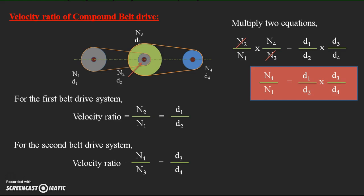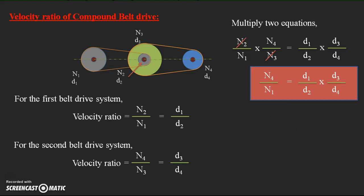These are the two expressions for the velocity ratio of the simple belt drive system and the compound belt drive system. Try to remember these formulas, as they are useful for solving problems when finding the power transmitted by a pulley.